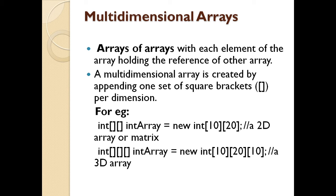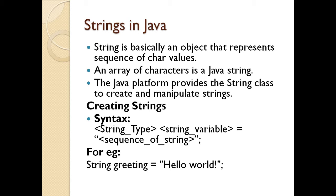Coming to the second multidimensional array. Array of arrays with each element of the array holding the reference of other array. A multidimensional array is created by appending one set of square brackets per dimension. For example, I have created here int array with new integer size 10 and 20. Or I have created a 3 dimensional array with new int size 10, 20 and 10. Now we will be looking into arrays when we do the practical examples.